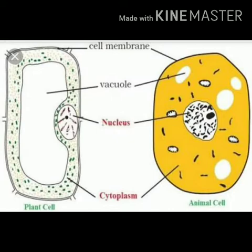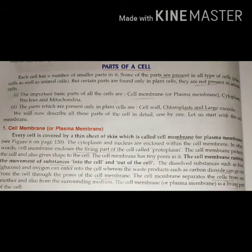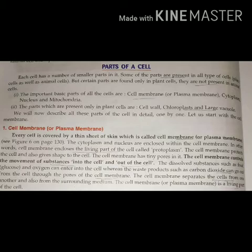We will discuss the first part — the cell membrane, also called the plasma membrane — which is the outer living covering of the cell. It protects the contents of our cell. It forms a barrier between the surrounding medium and the contents of the cell. Our plasma membrane is usually made up of a double layer of lipid molecules and protein molecules. It is a very thin, delicate, elastic, and selectively permeable membrane.